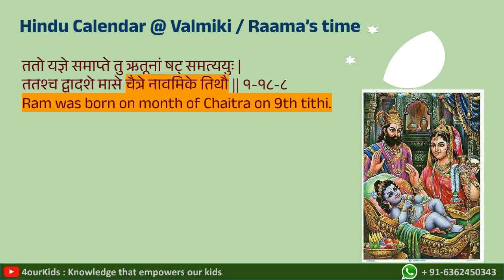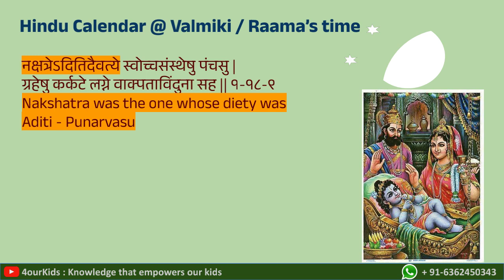How do we know the positions at the time of Rama? As we said, on Chaitra Navami it is Rama's birthday. Valmiki, in the Valmiki Ramayana written during Rama's time, mentions that Rama was born in the month of Chaitra, on the ninth tithi, and the nakshatra was one whose deity was Aditi — meaning Punarvasu. So we know it is on the ninth day of the waxing moon, near the two nakshatras whose deity is Aditi — Castor and Pollux, or Punarvasu.